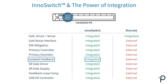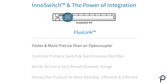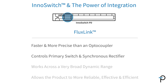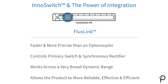That isolated feedback is critical. We call it Fluxlink, and it's more than just a replacement for an optocoupler. The Fluxlink is faster, it's more precise, and it allows us to do a much better job of controlling the primary switch and the synchronous rectifier in a way that works across a very broad dynamic range, and allows the product to be more reliable, more effective, and more efficient.